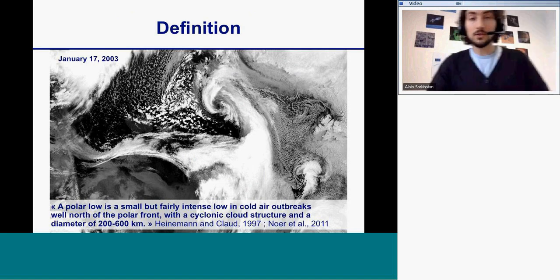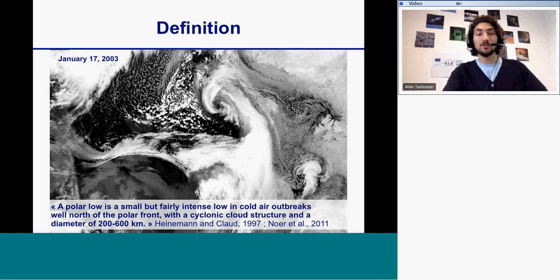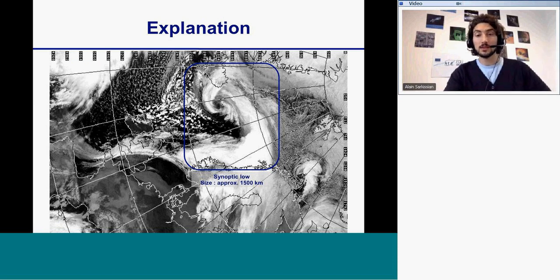After I will give the definition of the polar low. The polar low is a small but fairly intense low in the cold air outbreaks well north of the polar front with a cyclonic cloud structure and a diameter of 200 to 600 kilometers. This image from the satellite.